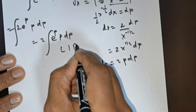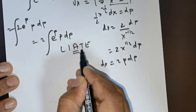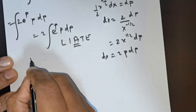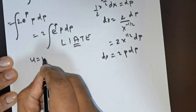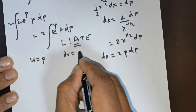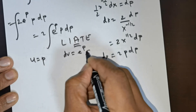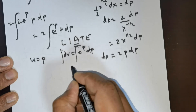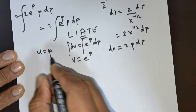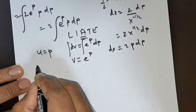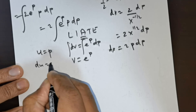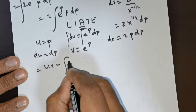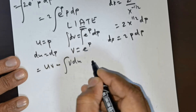Use the LIATE formula — algebra comes before exponential. So I take u to be equal to p and dv is equal to e raised to the power of p dp. Integrating dv, I get v is equal to e raised to the power of p. Differentiating u, I get du is equal to dp. Use the formula uv minus integral v du.